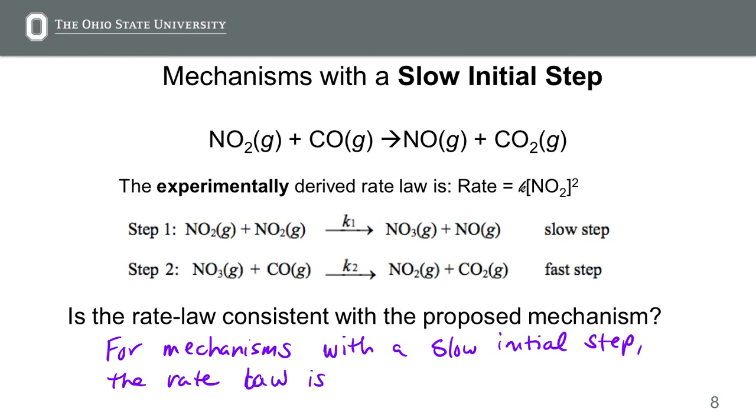What that means is that we can use the reactants and their stoichiometric coefficients and predict the rate law as if it were an elementary reaction. From step 1 for this mechanism, we would write rate equals some rate constant K times NO2 times NO2, which is equal to K times NO2 squared.